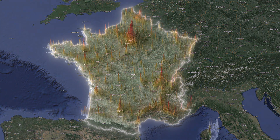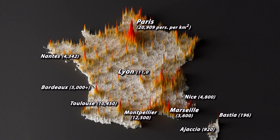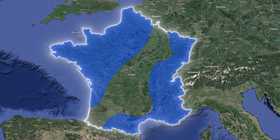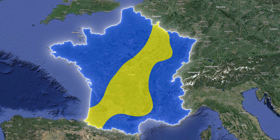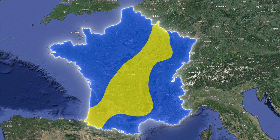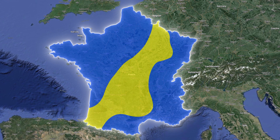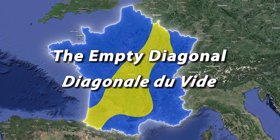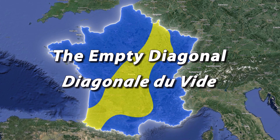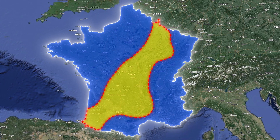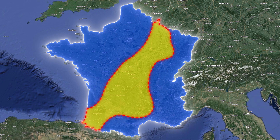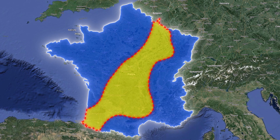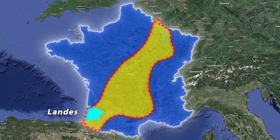Strangely, the distribution of population is quite uneven and localized throughout France. Most of the French population lives in certain regions of metropolitan France, while one region is almost empty. This region is so prominent that a separate term has been coined for it: the Empty Diagonal, or Diagonale du Vide in French. This portion of France is almost one-third of its land area, a band of low-density population stretching from the French Department of Landes to the Meuse.